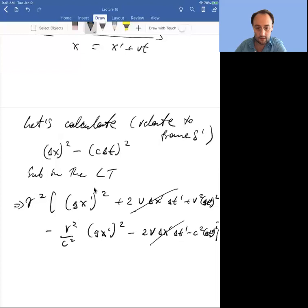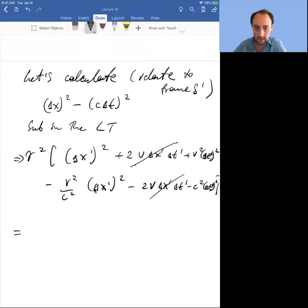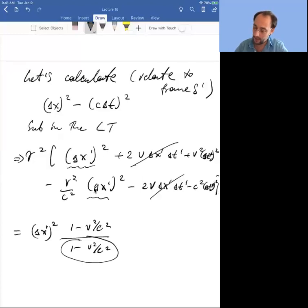After cleanup, you'll see that this equals delta x prime squared times 1 minus v squared over c squared, divided by 1 minus v squared over c squared. This came from the gamma term, and the numerator came from this one and this v squared over c squared.